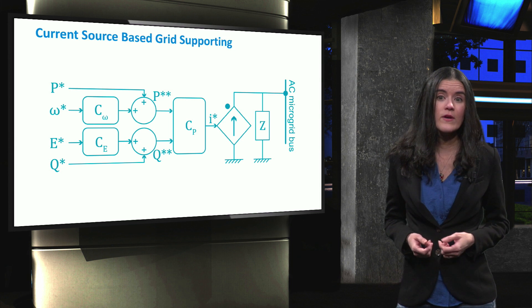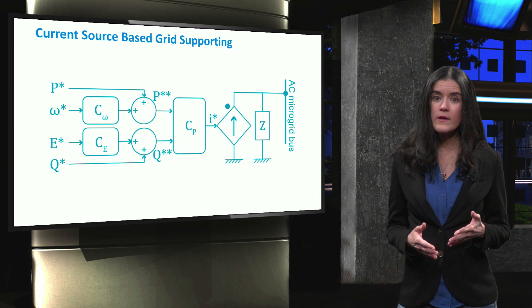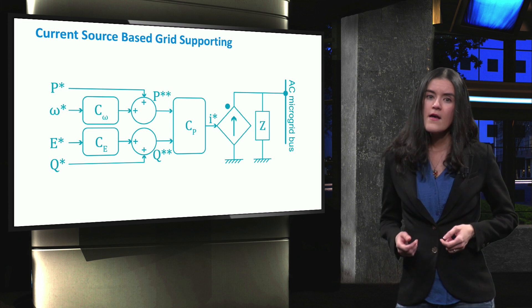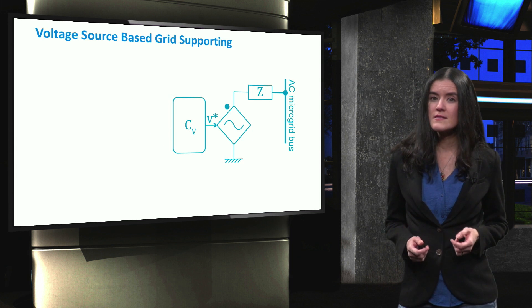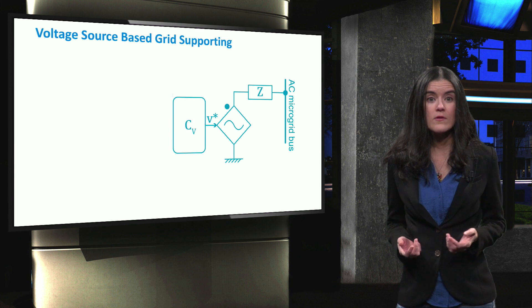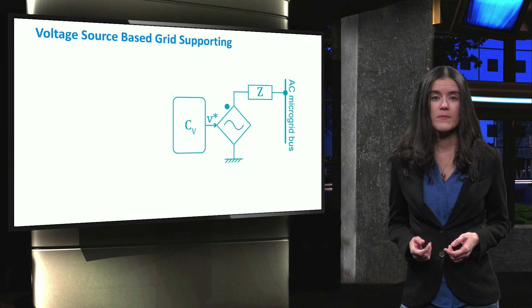As in the case of the grid-feeding type, these converters can operate during both islanded and grid-connected modes. The voltage source-based converter can be represented as a non-ideal voltage source that primarily controls both the voltage and the frequency of the microgrid.